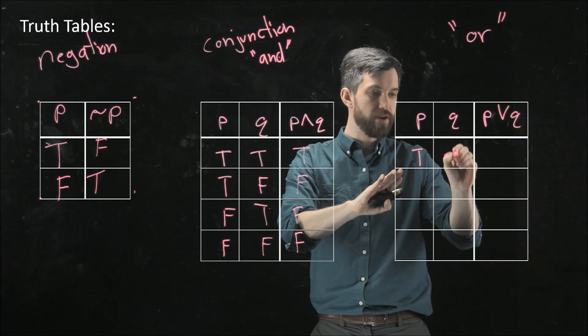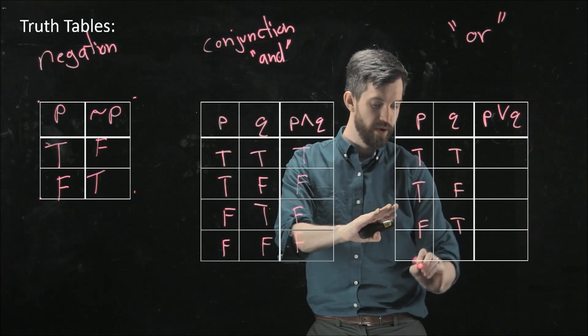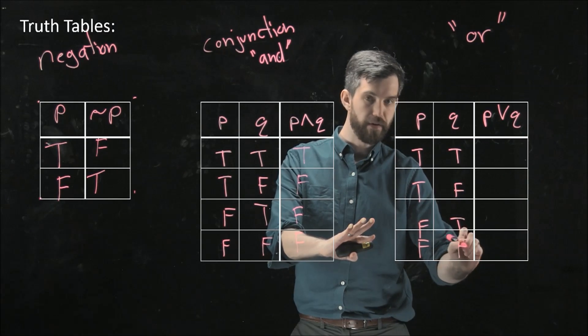I've got the same range of possibilities for my p and for my q. So I can have a true and a true, a true and a false, a false and a true, and a false and a false.